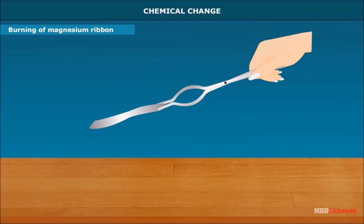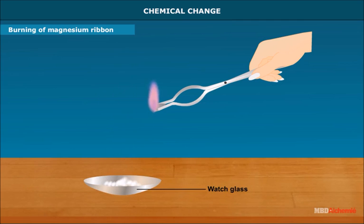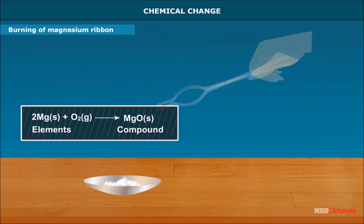Burning of magnesium is a chemical change which can be shown by this activity. Take a piece of magnesium wire and hold it with tongs over flame. The magnesium burns and leaves white ash. Collect it in a watch glass. The property of magnesium is different from that of magnesium oxide.